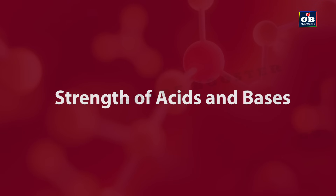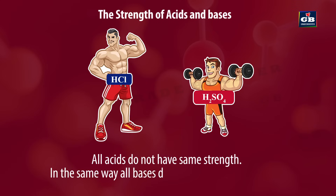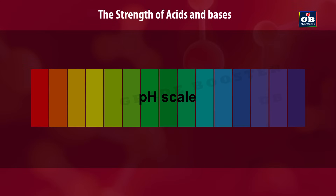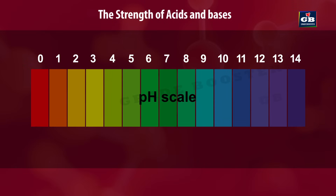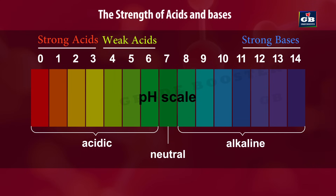Strength of acids and bases. All acids do not have the same strength, and all bases do not have the same strength. We can know the strength of an acid or base using the pH scale, which has values from 0 to 14. Substances with pH 7 are neutral; below 7 are acidic; above 7 are basic. Acids closer to 0 are strong acids and closer to 7 are weak acids. Bases closer to 14 are strong bases and closer to 7 are weak bases.